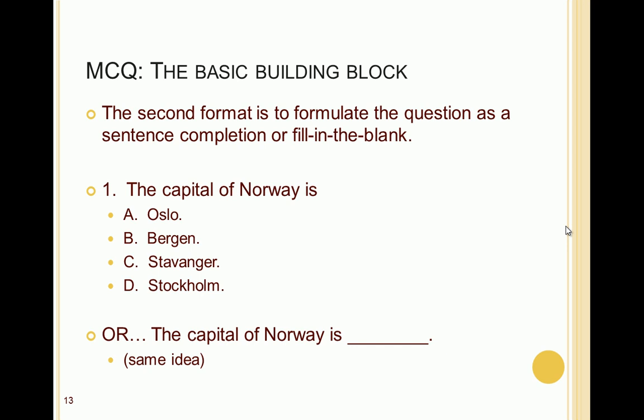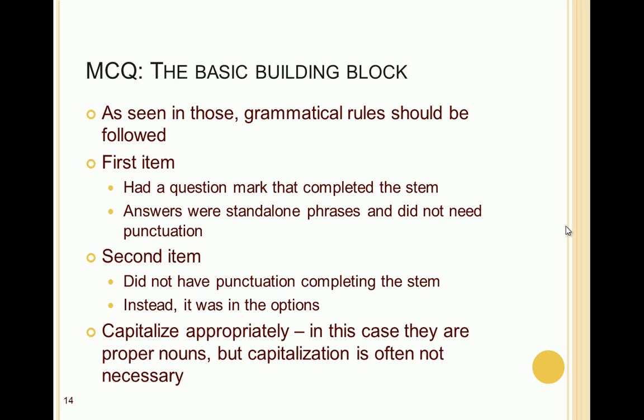Notice that we try to make items grammatically correct. In the direct question format, there is a period at the end of each answer because there's no period in the stem. In the sentence completion format, the stem is a complete sentence with a period, so each answer would not have a period. We should follow these grammatical rules — the first item has a question mark completing the stem, so the answers need no punctuation. Also, make sure to capitalize appropriately — in this case, all answers are proper nouns (cities), so they are capitalized; but capitalization is often not necessary if answers are common verbs or nouns.